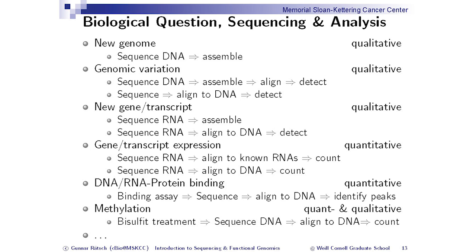For gene expression or transcript expression — which is more quantitative — you sequence the RNA, align to known RNAs, and then count. Or you sequence RNA, align to the DNA, and count the gene expression. Then there are more complex techniques like RNA-protein binding assays.